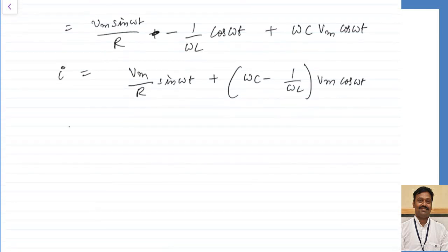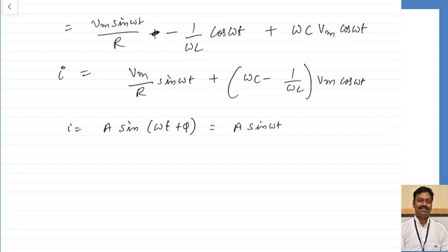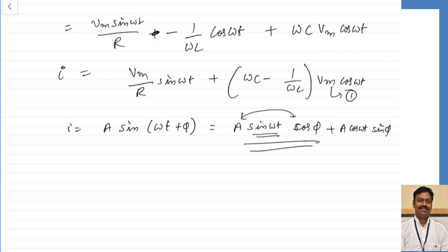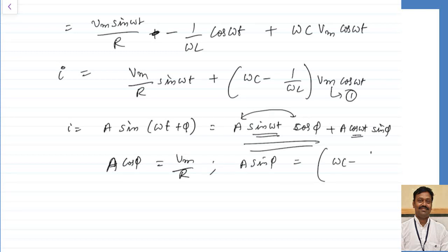I want to write the total current I in the form A into sin of omega t plus phi. Using the expansion sin A plus B equals sin A cos B plus cos A sin B, comparing terms: A cos phi equals V maximum by R, and A sin phi equals V maximum times omega C minus 1 by omega L.